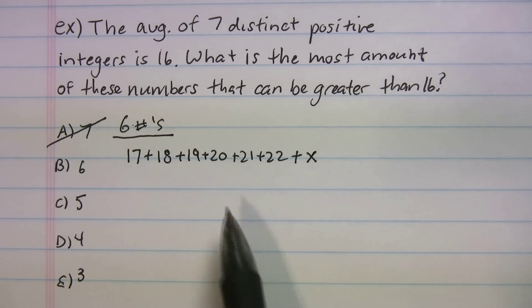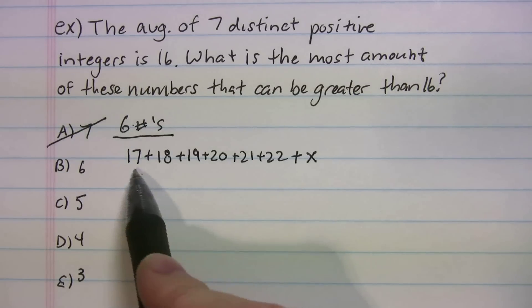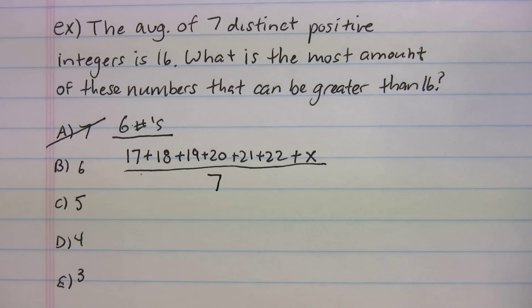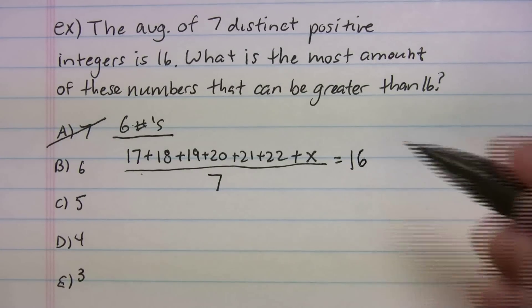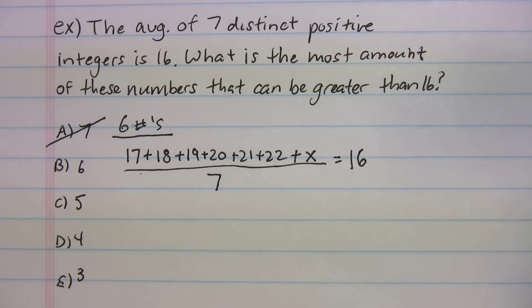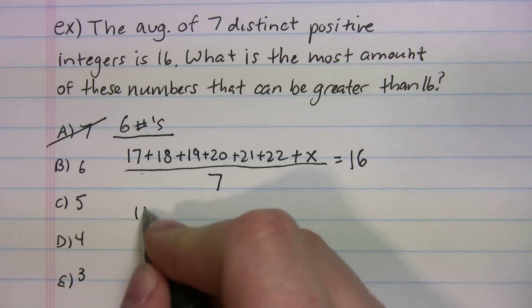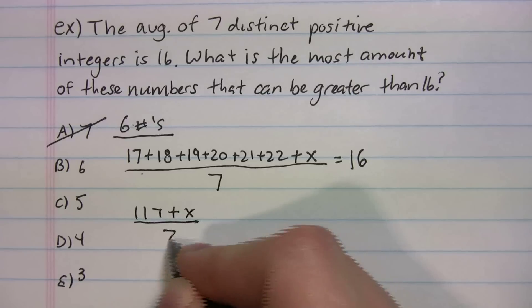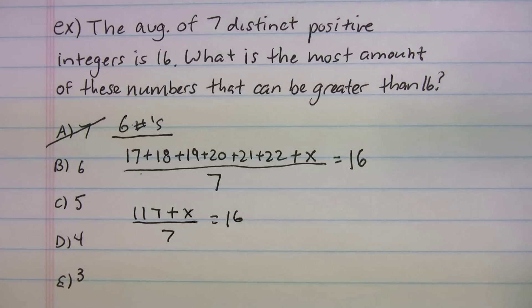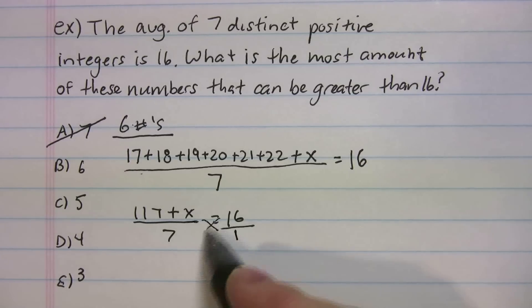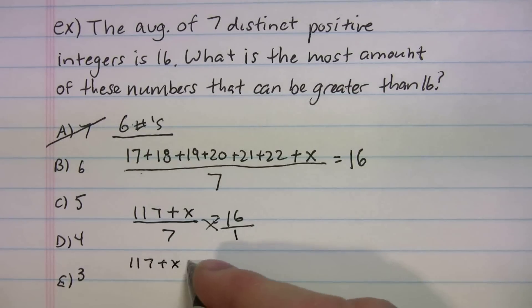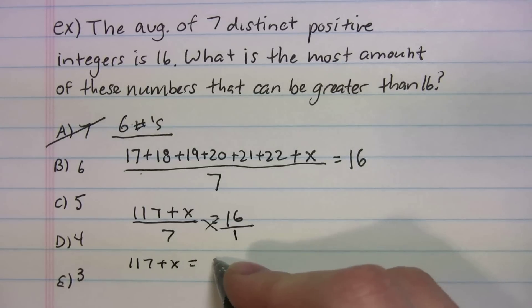All I'm doing here is I'm actually plugging into the average formula. So the sum of all these numbers divided by seven, and again, this is just the average formula, sum of everything divided by how many we have, and what did it say the average was? 16. So now let's simplify. I got my calculator here, so I'm just going to calculate as you guys do it. 17 plus 18 plus 19 plus 20 plus 21 plus 22 equals, so that's 117 plus x divided by 7 equals 16. 16 times 7 gives us 112.